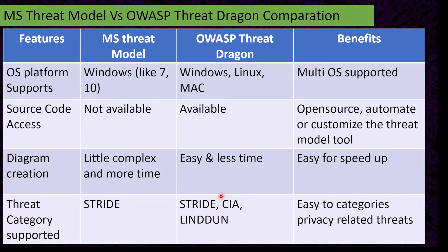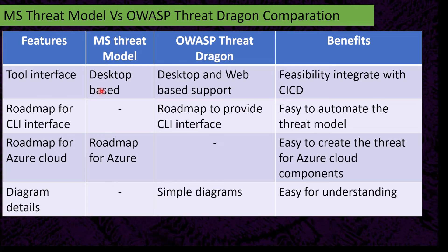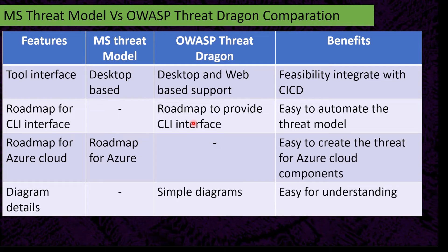For tool interfaces, MS Threat Model is desktop-based, while OWASP Threat Dragon supports both desktop and web-based interfaces. The benefit of having a web-based interface and web APIs is that we can easily integrate with the CI/CD pipeline. OWASP Threat Dragon also has a roadmap to provide a CLI interface, which will make it even easier to automate the threat model.